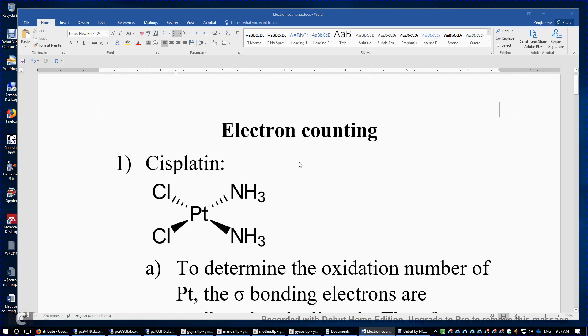I will talk about electron counting in transition metal chemistry today using several examples. The first example is cisplatin. This is an anti-cancer molecule.